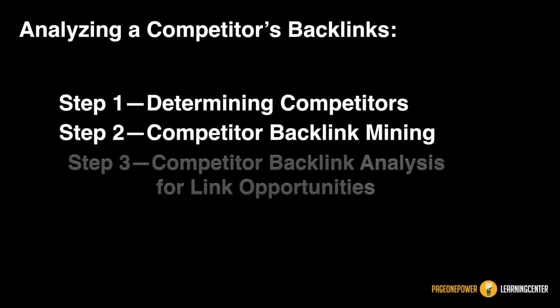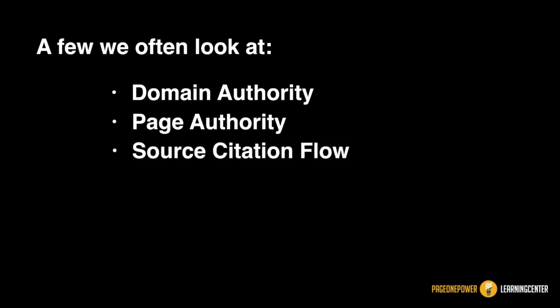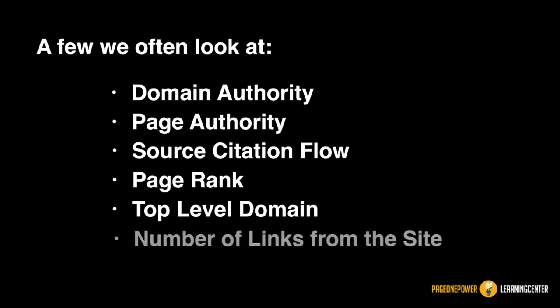Step 3: Competitor Backlink Analysis for Link Opportunities. Now let's actually analyze the domains and links that your competitor has that you don't. There should be a variety of metrics included in your dataset that will help you parse down to quality link opportunities. A few we often look at: domain authority, page authority, source citation flow, page rank, top-level domain, and number of links from the site. Although these won't often tell the full story of each link, they should give you a quick filter of which links are worth pursuing.